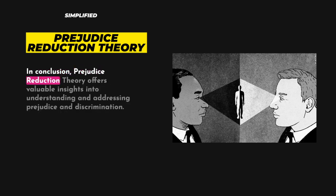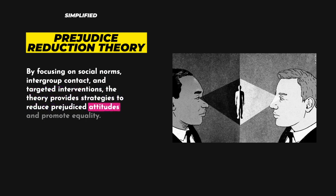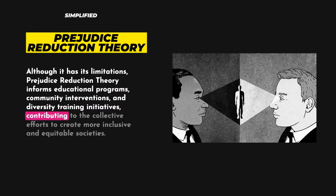In conclusion, Prejudice Reduction Theory offers valuable insights into understanding and addressing prejudice and discrimination. By focusing on social norms, intergroup contact, and targeted interventions, the theory provides strategies to reduce prejudiced attitudes and promote equality. Although it has its limitations, Prejudice Reduction Theory informs educational programs, community interventions, and diversity training initiatives, contributing to the collective efforts to create more inclusive and equitable societies.